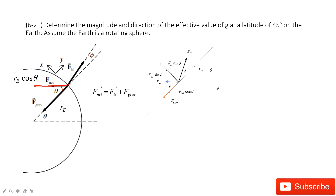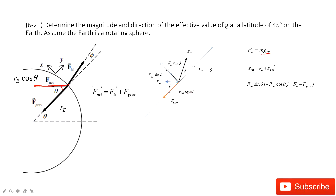As we said, the normal force equals mass times the effective g. So if we want to know the effective g, we must know the normal force, and this normal force is determined by the net force and gravity. So we write the vector equation: net force equals normal force plus gravity, with the net force expressed in its x and y components.